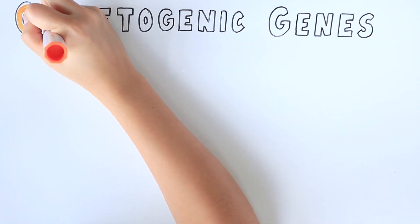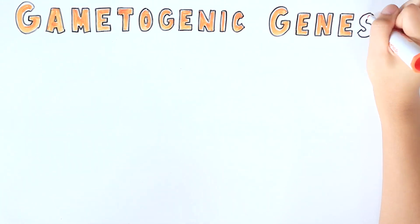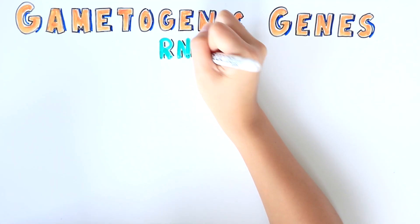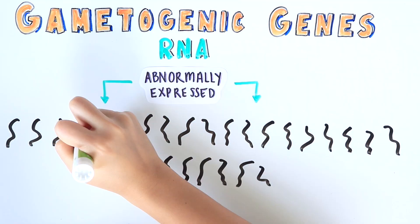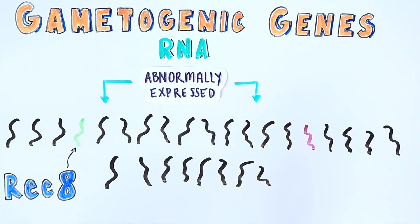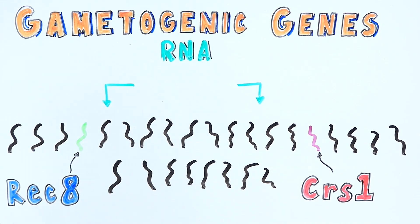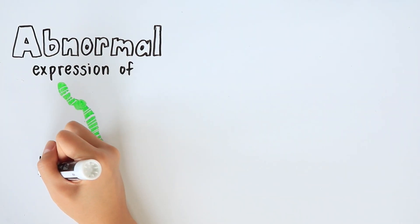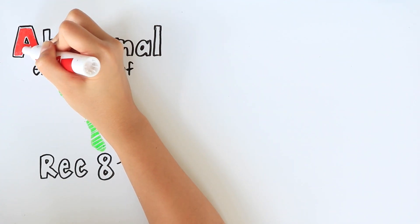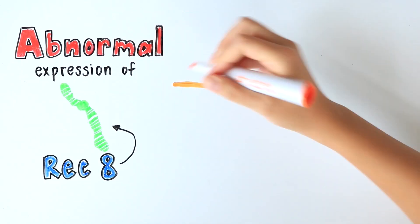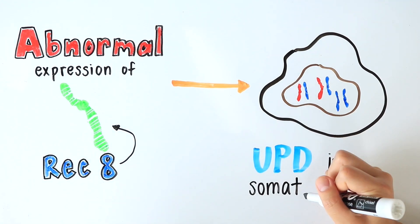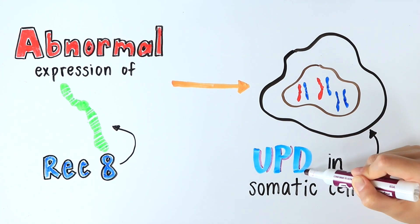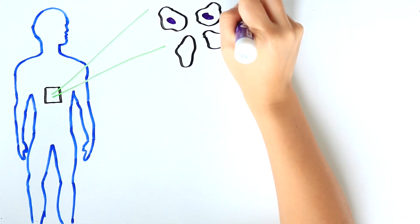Among the many genes that are upregulated in RNAi or MMI1 mutants, we wondered if any gene in particular could be a driver of UPD. We analyzed 27 abnormally expressed gametogenic genes and found that only two of them were linked to UPD: the meiotic cohesin REC8 and the meiotic cyclin CRS1. We confirmed that when REC8 was abnormally expressed in somatic cells, UPD occurred at high frequency. In those cells, REC8 protein — normally expressed only in cells undergoing gametogenesis — starts localizing to chromosomes in somatic cells. The untimely expression of REC8 and its localization to chromosomes in somatic cells leads to abnormal segregation of chromosomes responsible for UPD.